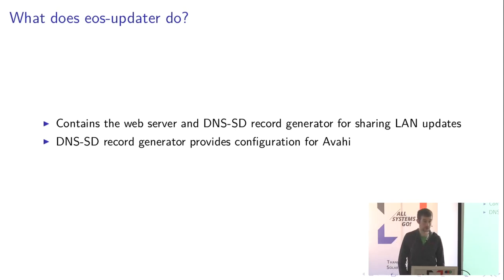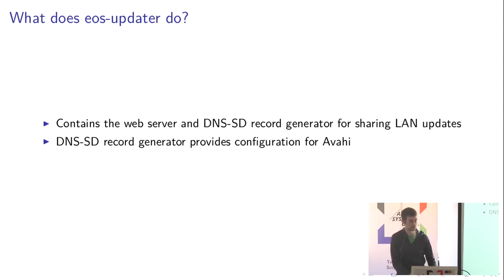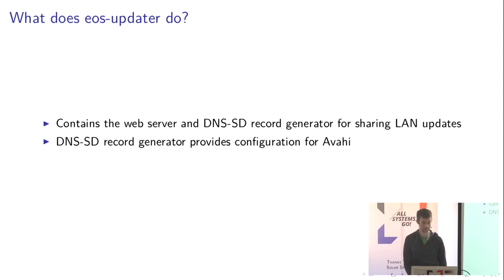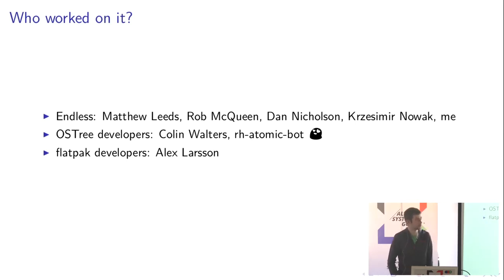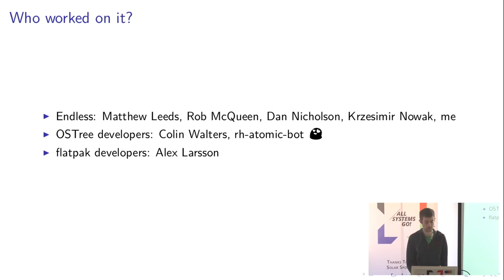We have a web server and a DNS-SD record generator for LAN sharing, which takes your local OS tree repository, exposes it over the network, updates an Avahi list of DNS-SD records, and generates the bloom filter from your refs — plus various bits of plumbing to integrate with systemd and socket activation. This has been worked on by quite a few people at Endless, with lots of help and review from Colin and Alex at OS tree and Flatpak, and review and merge testing done by the RH atomic bot.